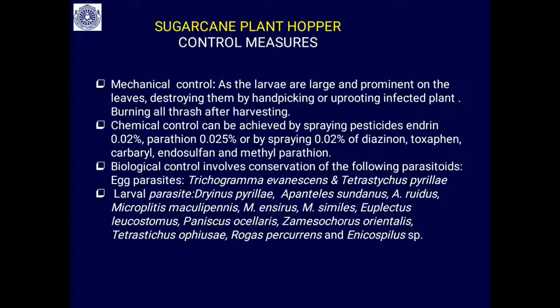For chemical control, spraying insecticides such as endrin, parathion, or endosulfan is effective, though these chemicals are dangerous to the environment and must be used carefully. For biological control, a range of beetles and hymenopteran insects — including wasps — act as egg parasites and larval parasitoids of the sugarcane plant hopper. Maintaining field conditions that support these parasitoids is an effective biological means of controlling the sugarcane plant hopper.